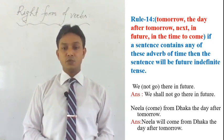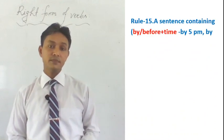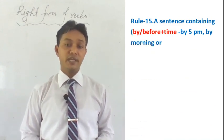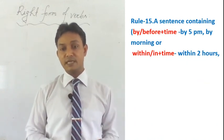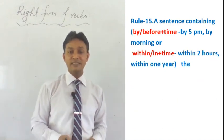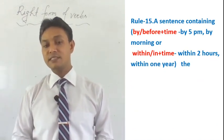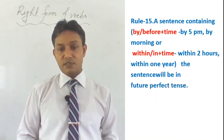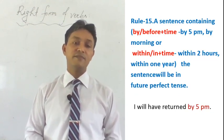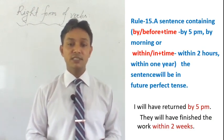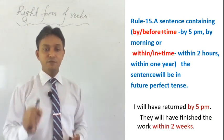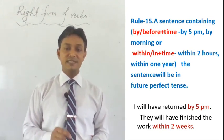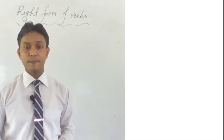Rule number fifteen: in a sentence containing 'by + time', 'before + time', 'within + time', or 'in + time', we write the sentence in future perfect tense. Examples: 'I will have returned by 5 pm.' 'They will have finished the work within two weeks.' If we find 'by/before + time' or 'in/within + time' in any sentence, we write it in future perfect tense.